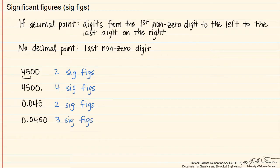So let's say we want to write this in scientific notation. This would be 4.5 times 10 to the third. However, this would be 4.500 times 10 to the third.